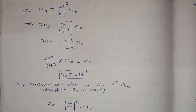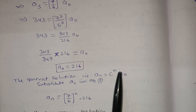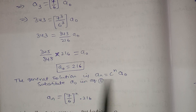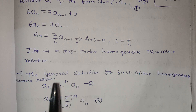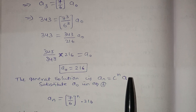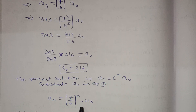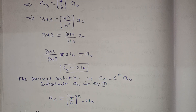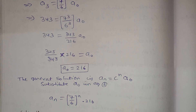Now the general solution is aₙ = cⁿ · a₀. Substituting a₀ = 216 and c = 7/6, the general solution becomes: aₙ = (7/6)ⁿ × 216. This completes the solution of the first-order linear homogeneous recurrence relation.